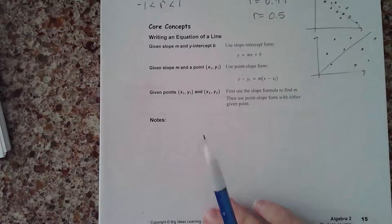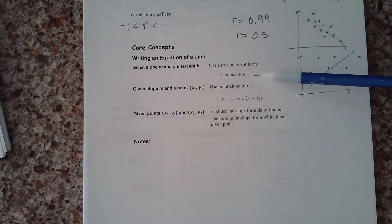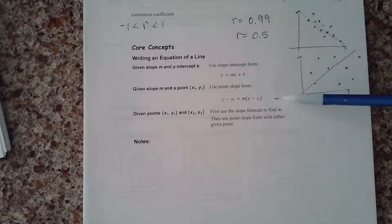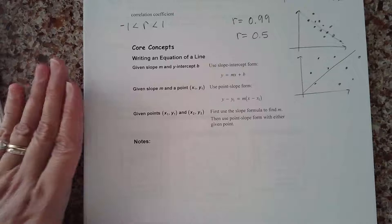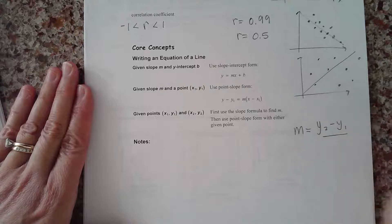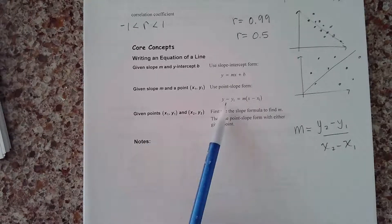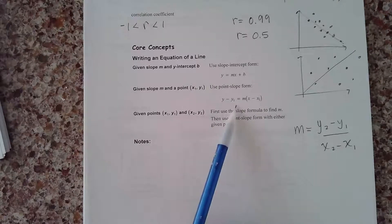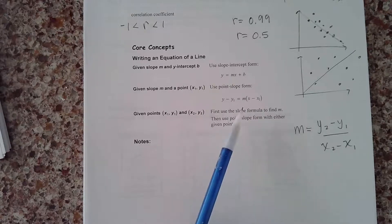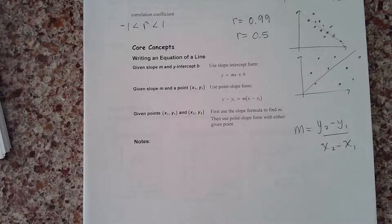Some other things you probably need to remind yourself of for this section are just some linear equation formulas. This is your slope-intercept form: y equals mx plus b. Your slope formula is m equals y2 minus y1 over x2 minus x1 — that's change in y over change in x. And then another one you might need is the point-slope formula. If you're given a point and a slope, you can use that formula. We're going to be using all these formulas to help if we were calculating this stuff by hand.